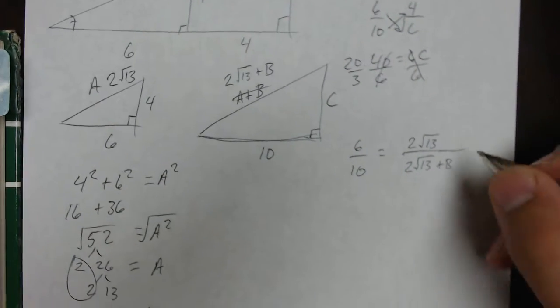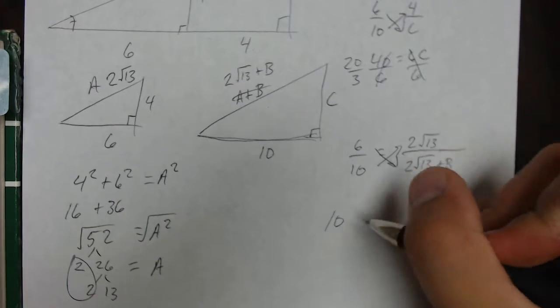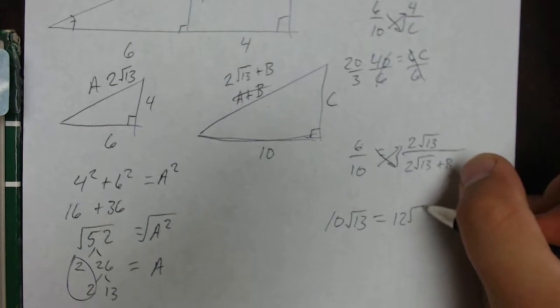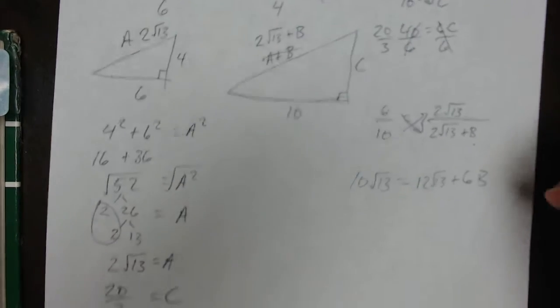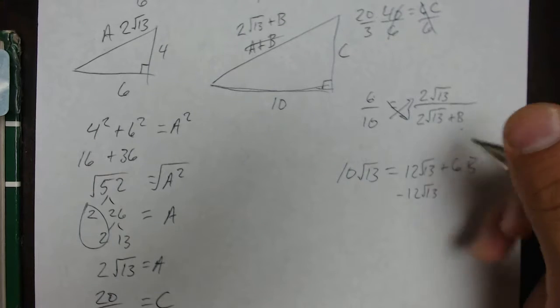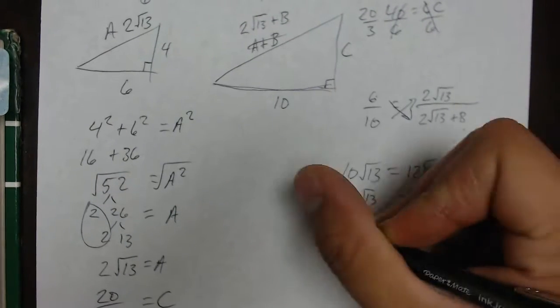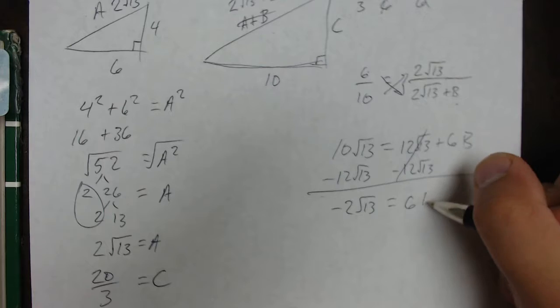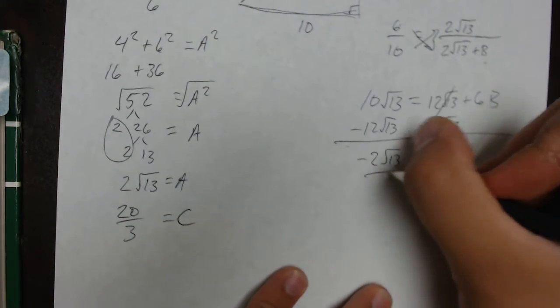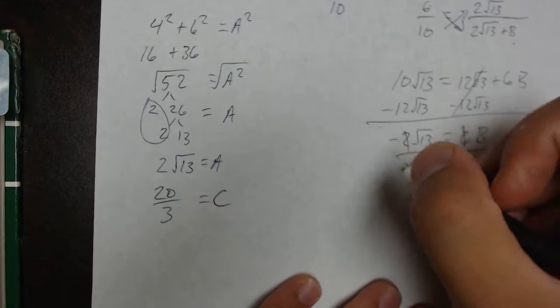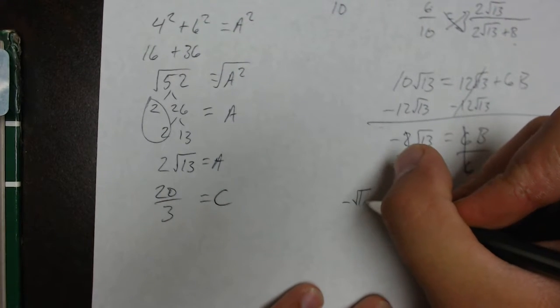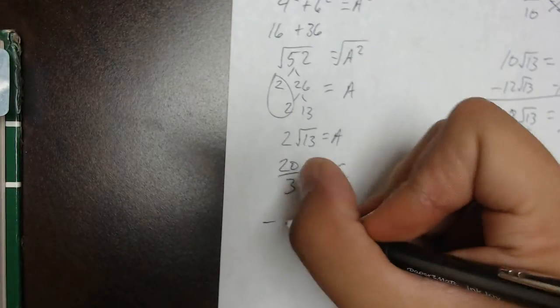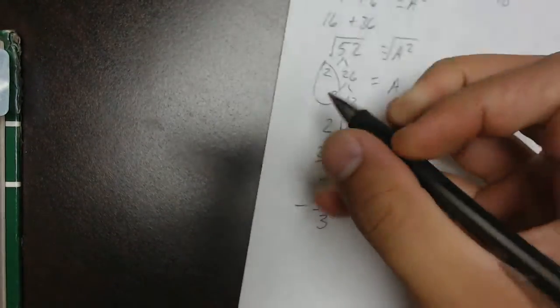Now let's solve for B, the last one. We cross multiply here. On the left side, we get 10 times the square root of 13. On the right side, we have to distribute the 6 to each of the terms, so we get 12 times the square root of 13 plus 6B. We're going to subtract 12 root of 13 from each side. That gives us negative 2 root 13. The last thing we need to do is divide by 6, and that will reduce to negative 1 third. So we have negative square root of 13 over 3. The 1 is invisible there, and that's going to be the value of B. And those are our answers.